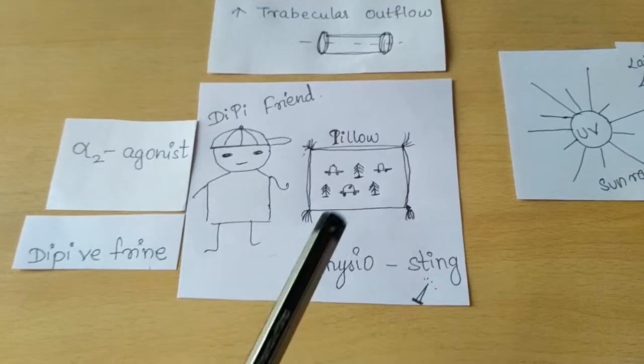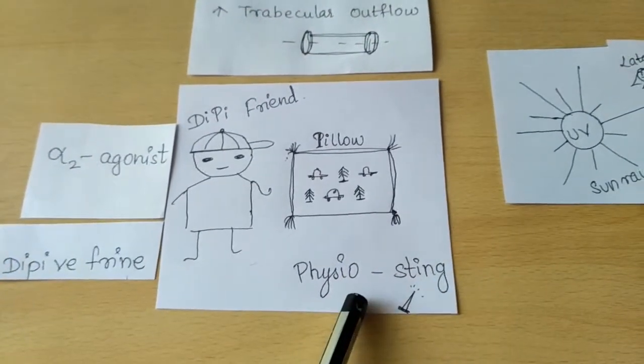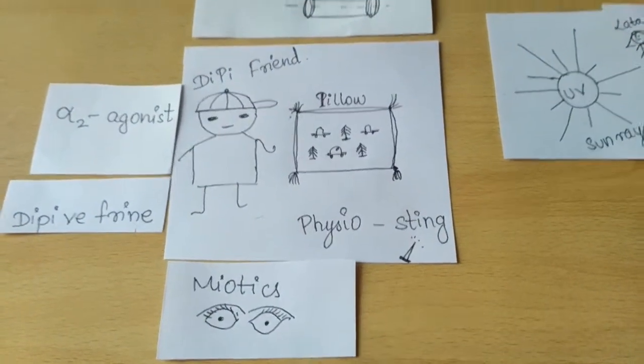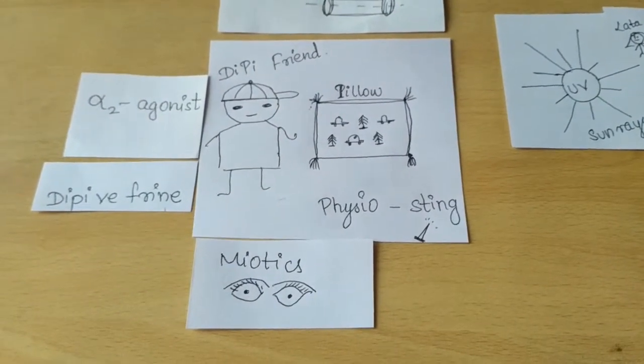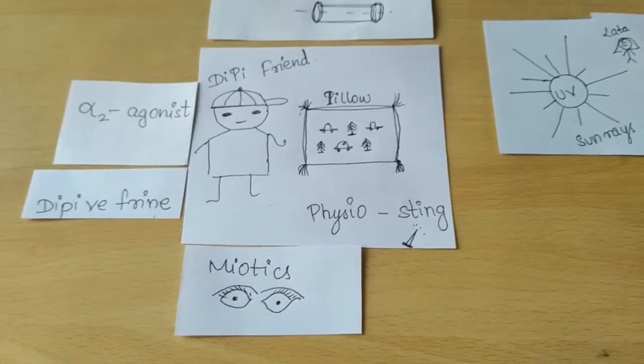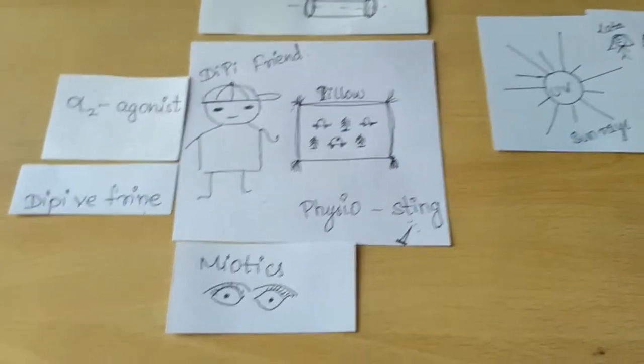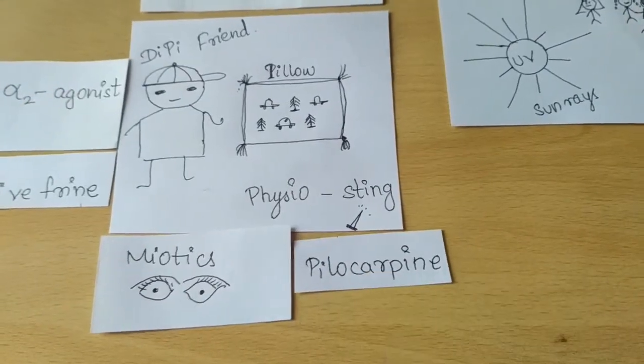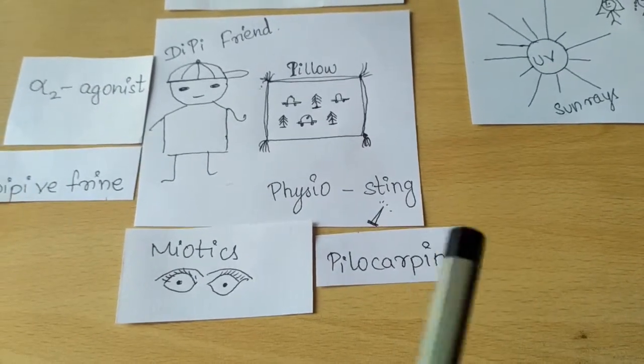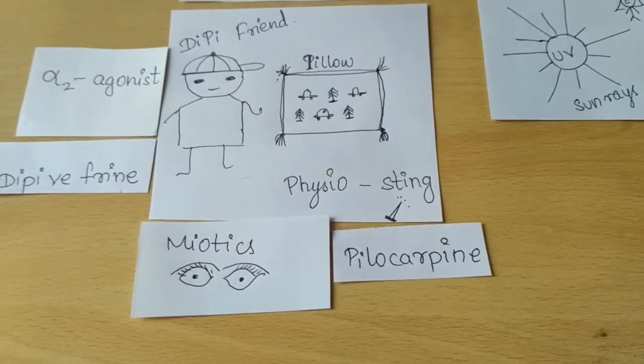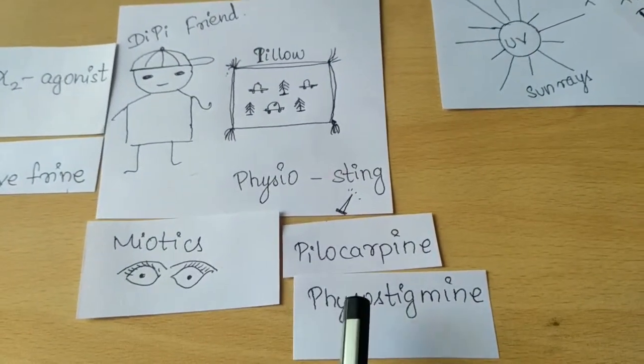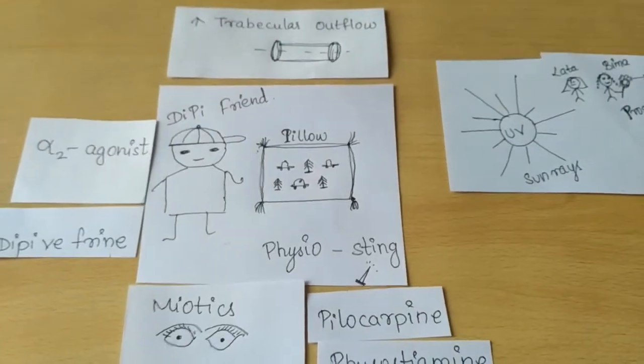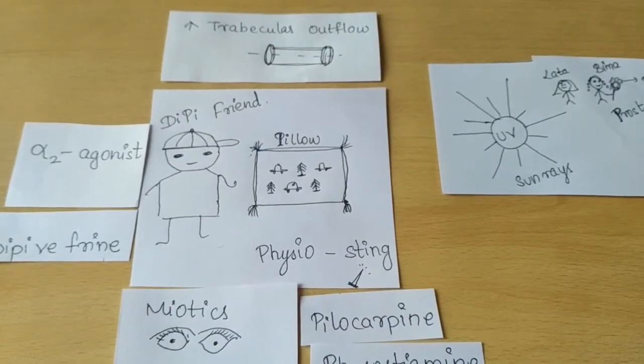On seeing pillow and physio, his eyes constrict, which means the other class of drugs is myotics, which means constriction of the pupil. The drugs under it are pillow with car and pine trees on it - that is pilocarpine - and physio which stings. Physiotherapy which stings - the drug is physo or physostigmine. So these are the drugs for increasing the trabecular outflow.